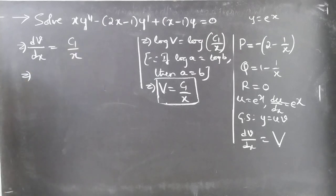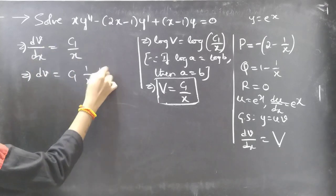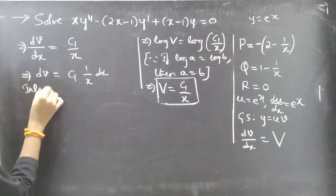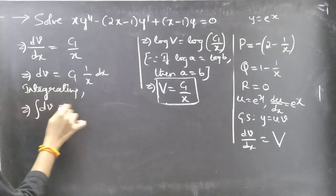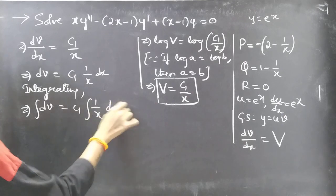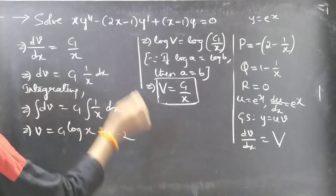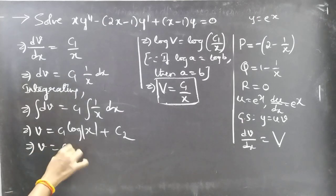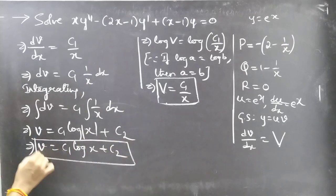Separating variables: dv = c₁·(1/x)·dx. Integrating both sides: ∫dv = c₁∫(1/x)dx, giving v = c₁·log|x| + c₂. So we have found v, and we already have u = e^x, so we can now write the general solution.